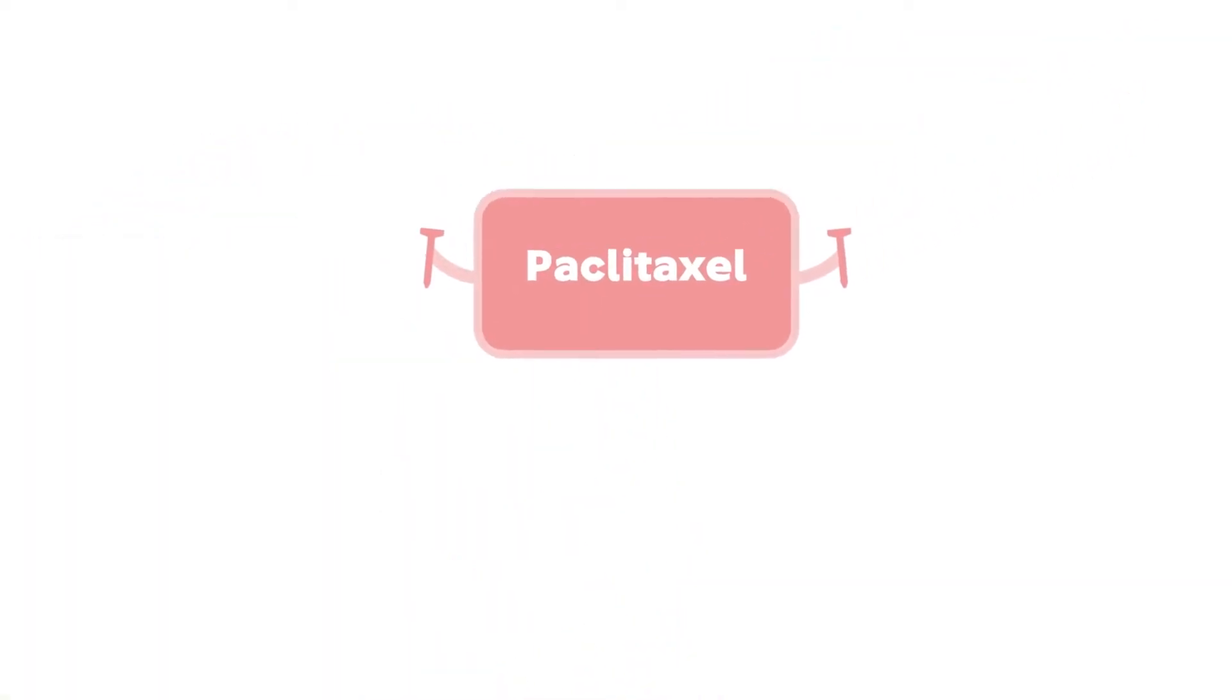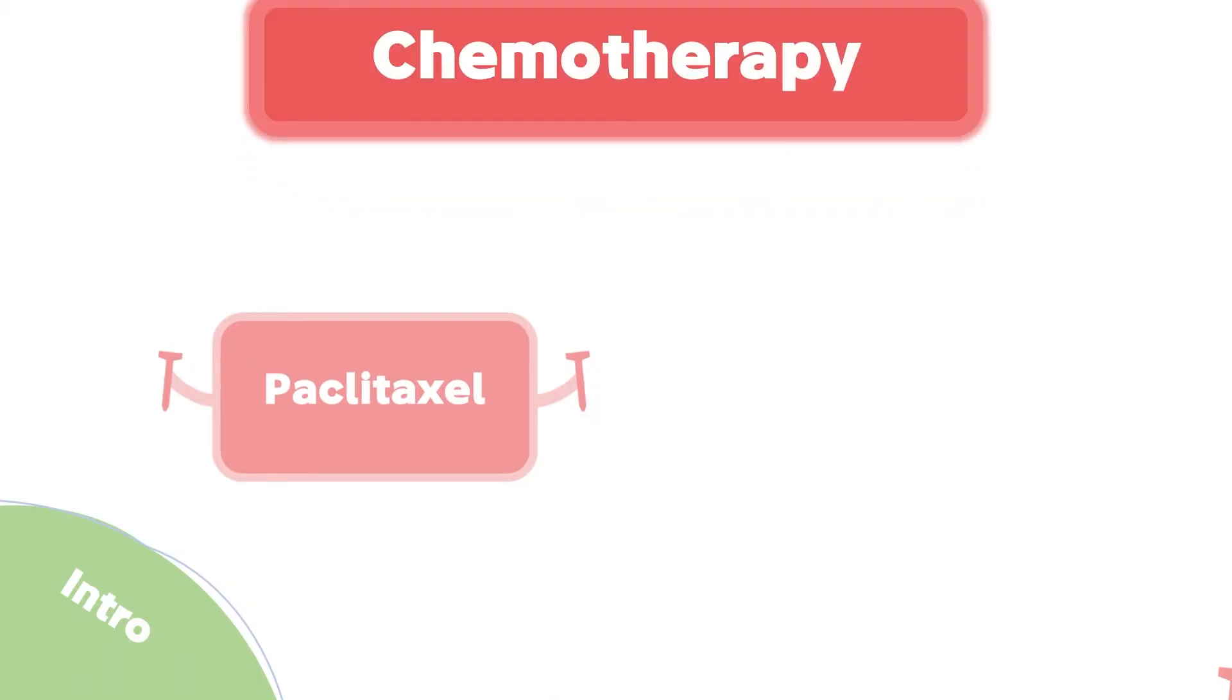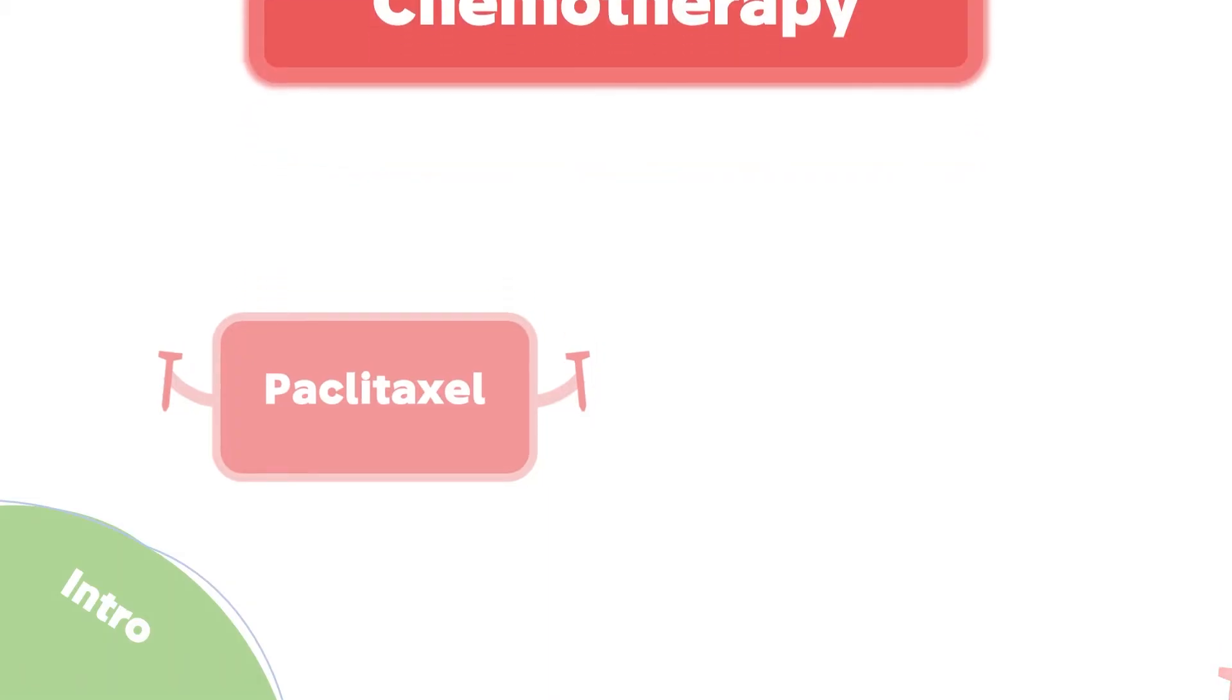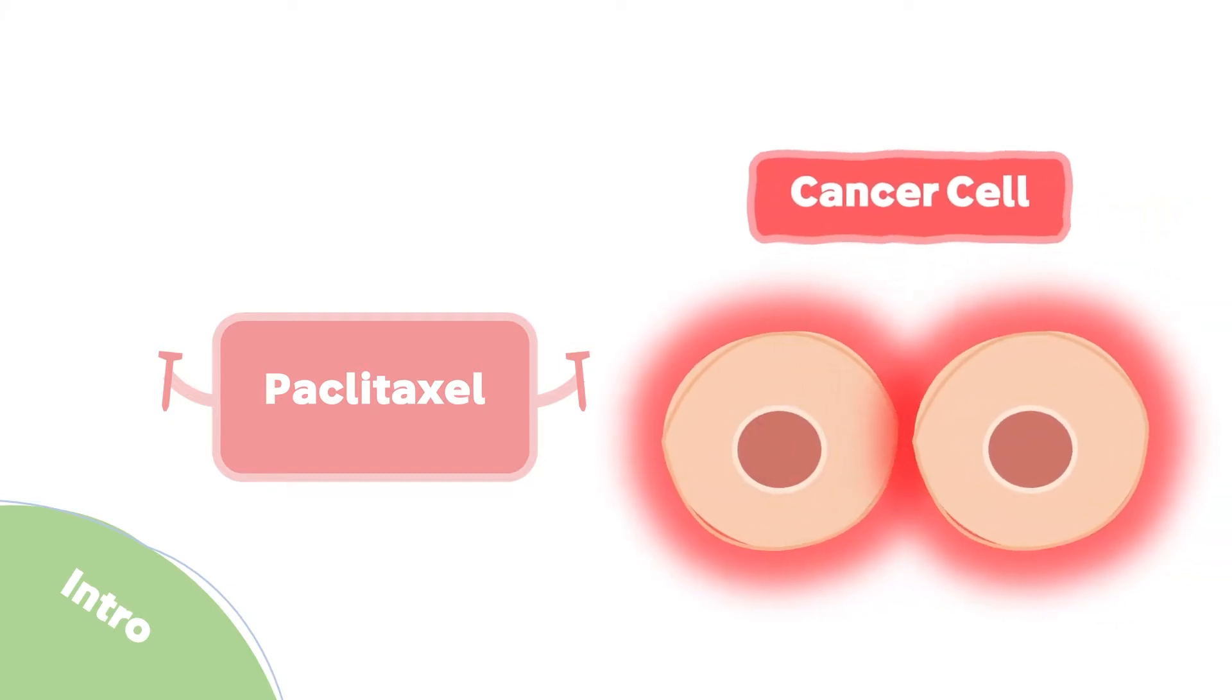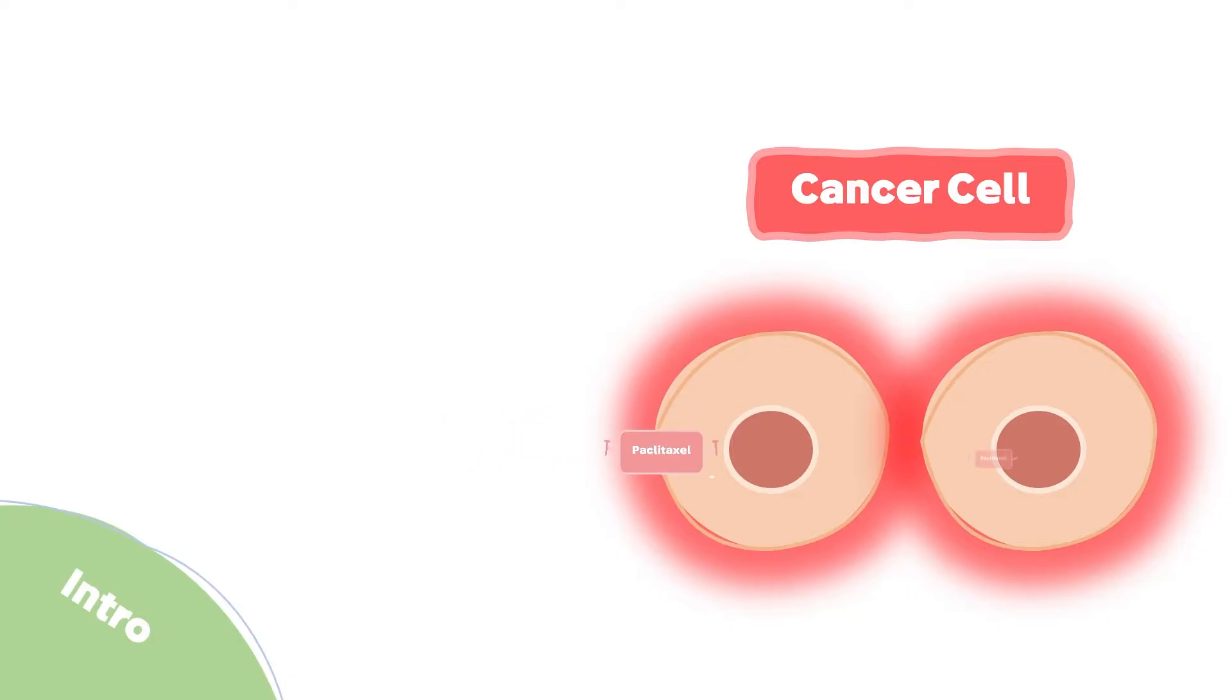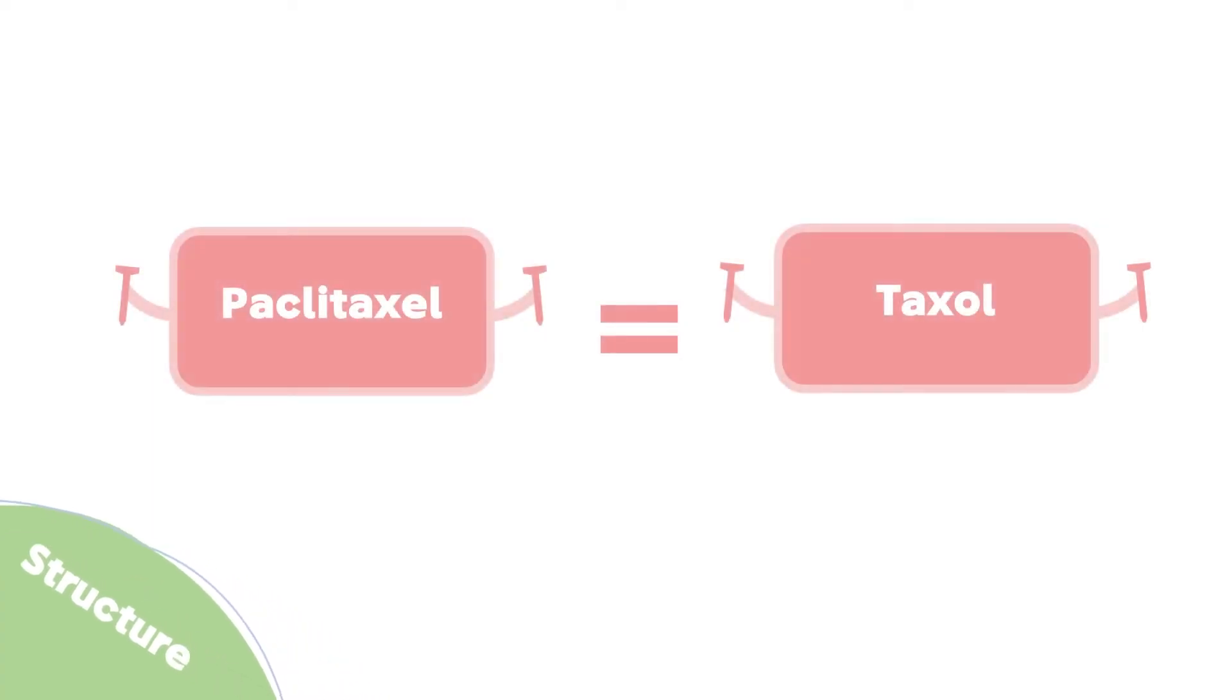Paclitaxel is one of the chemotherapies used to treat cancer patients. Cancer cells are mutated cells that are constantly dividing, and paclitaxel is uptaken by these cells leading to their death.